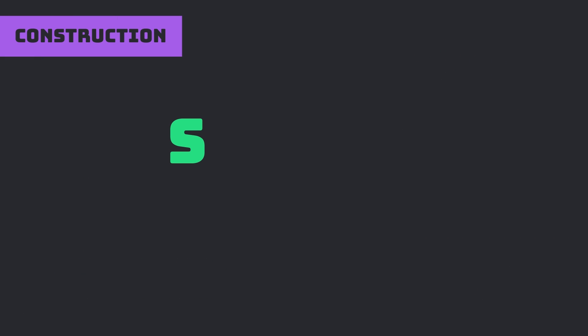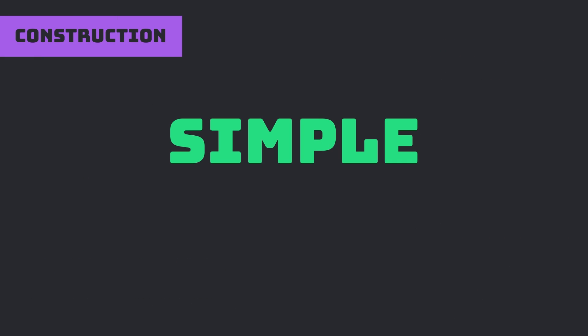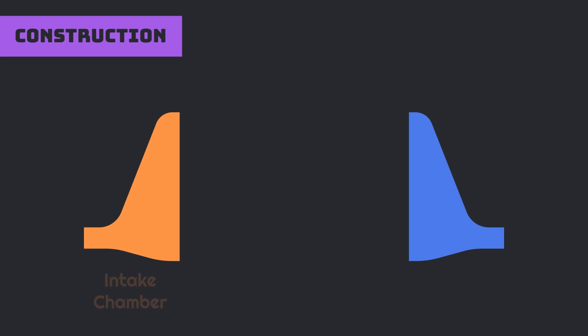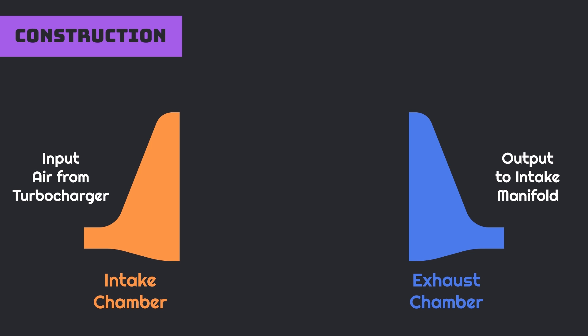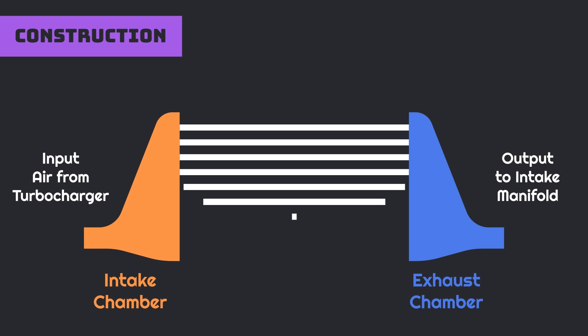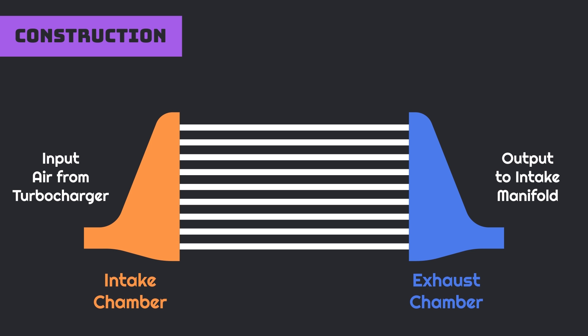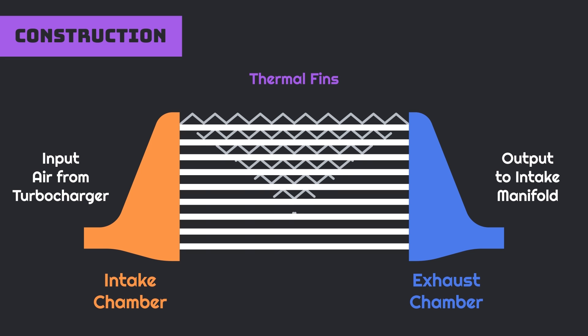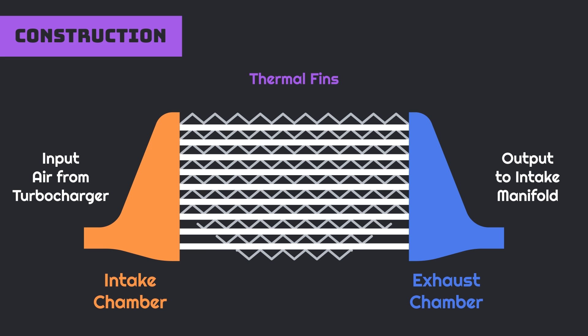The construction of intercooler is quite similar to the radiator. Intercooler consists of two main chambers: the first one is the intake chamber and the second one is the exhaust chamber. The intake chamber is connected with the turbocharger output, while the exhaust chamber advances to the intake manifold of an engine. Both chambers are interconnected with many highly thermally conductive excess tubes. To increase the heat exchange capacity of the intercooler, various thermal fins are provided between these tubes.